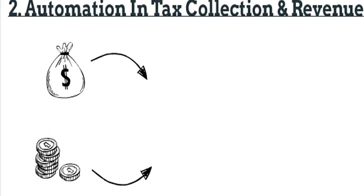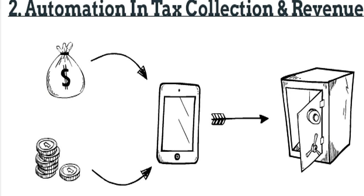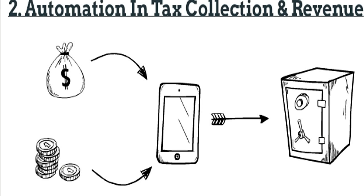Category number two: automation and tax collection and revenue. In India, taxpayers are hoping to pay less and tax administrators are hoping to collect more. This can lead to bribery and corruption in the tax office. So, automation is the best way to deal with this. Government can give incentives for paying online. Hopefully, our government is working on this after demonetization.